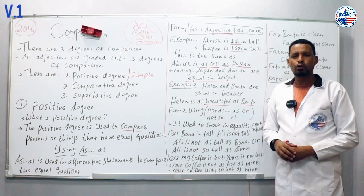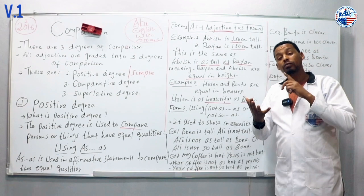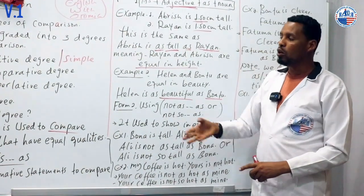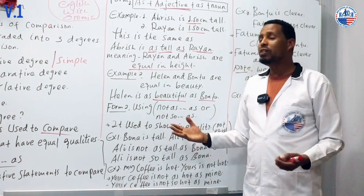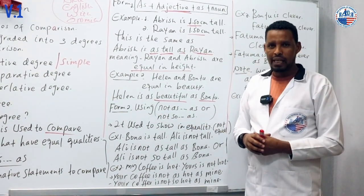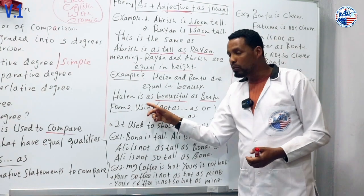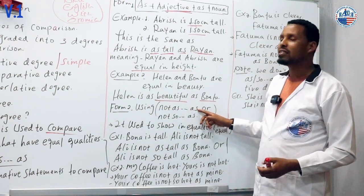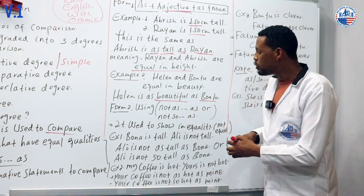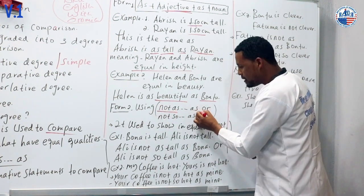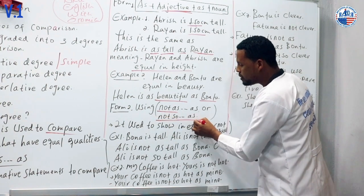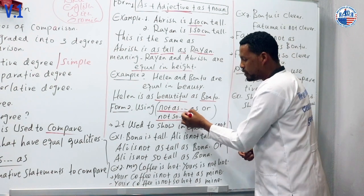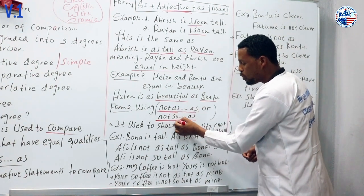For negative degrees, the formula is 'not as...as' or 'not so...as'. Not as...as or not so...as - this is the formula that you use for negative degrees.